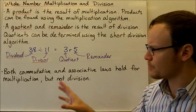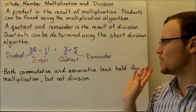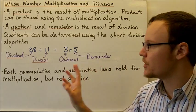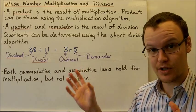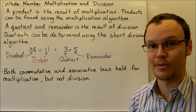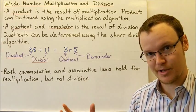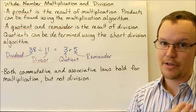Both commutative and associative laws hold for multiplication, but not for division. The commutative law is that two numbers being multiplied can be multiplied in any order. So 2 × 3 is the same as 3 × 2, but it doesn't work for division.